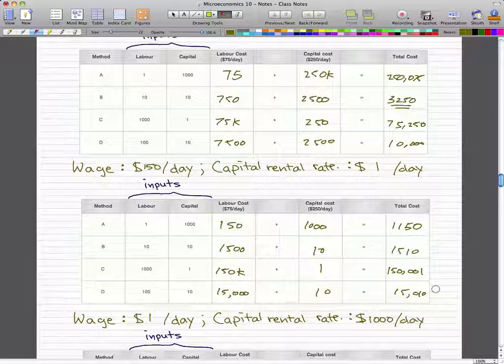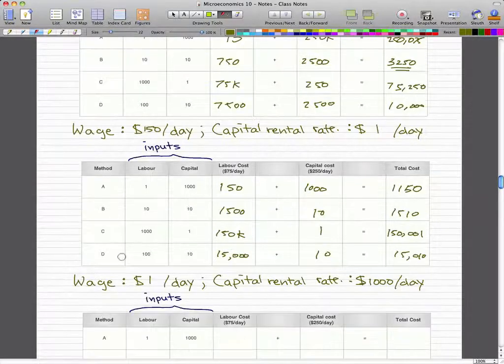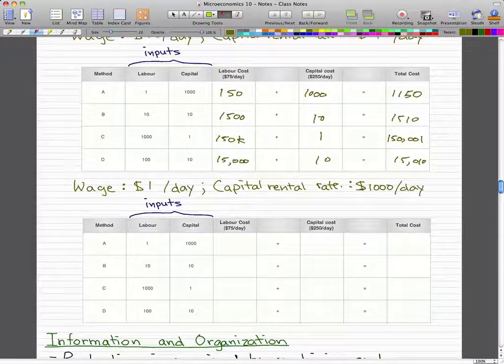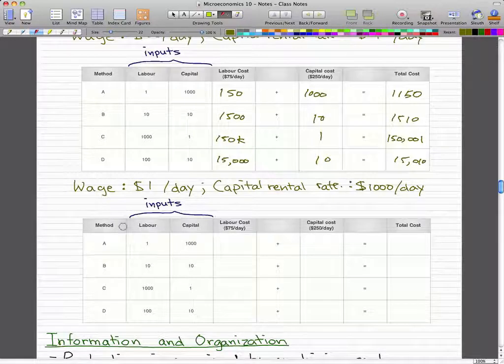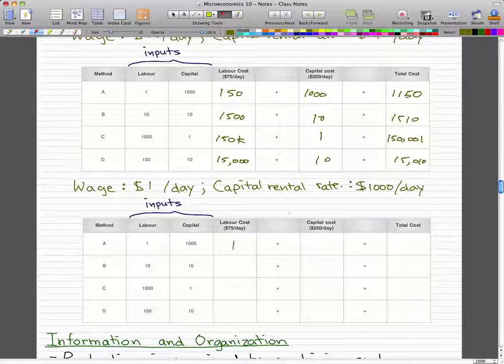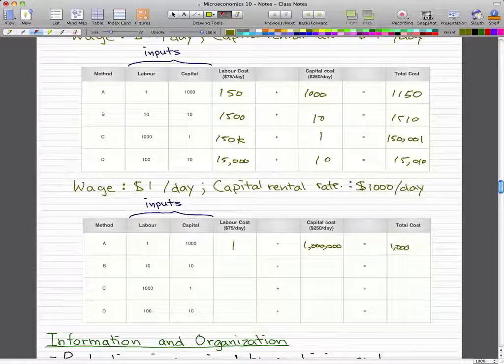So if you got the right answers, give yourselves a pat on the back. Now we'll do wage equals $1 per day and capital rental rate equals $1,000 a day. So $1 times 1,000 will give us $1,000. So in total, that's pretty much $1,000 and $1,000.